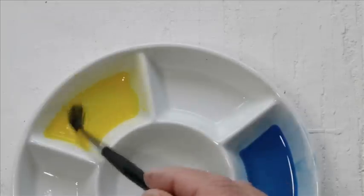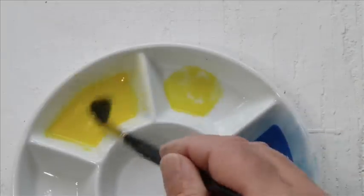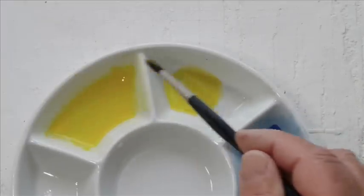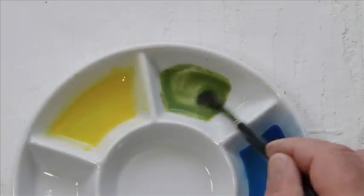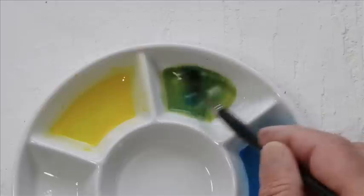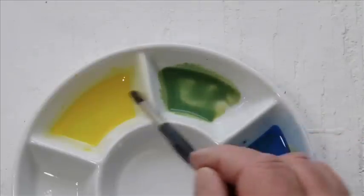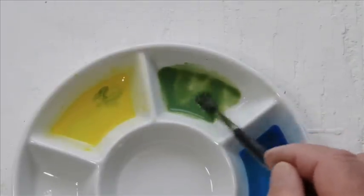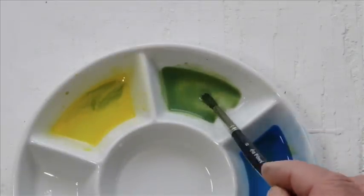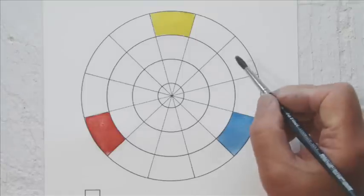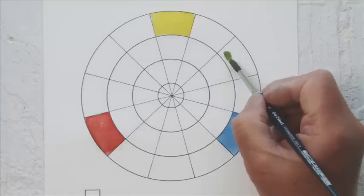We'll start with green, which is a mixture of the yellow and blue. Adjust the mix carefully so that you get a mid-green that is neither too yellow or too blue. Colour in the square centrally between the yellow and blue.